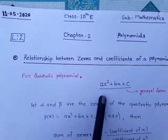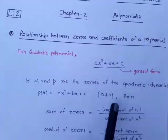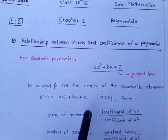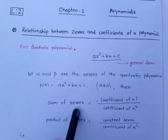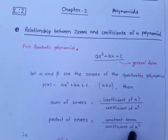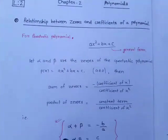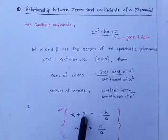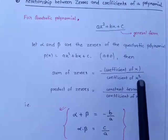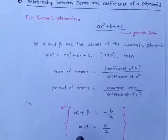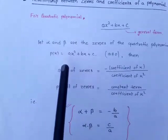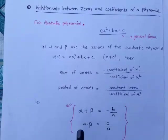If we assume alpha and beta are two zeros of the quadratic polynomial p(x) = ax² + bx + c, where a ≠ 0, then we find two patterns: sum of zeros equals minus coefficient of x upon coefficient of x², and product of zeros equals constant term upon coefficient of x². That is: alpha + beta = –b/a, and alpha × beta = c/a.